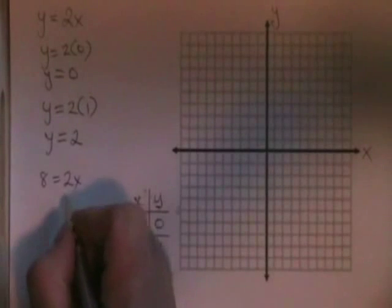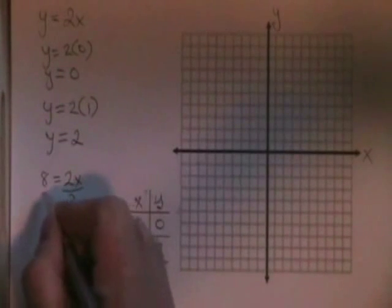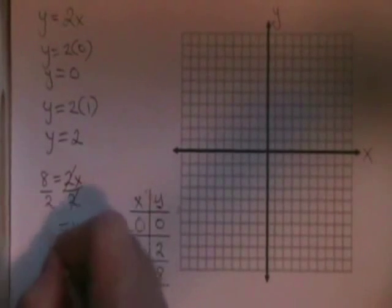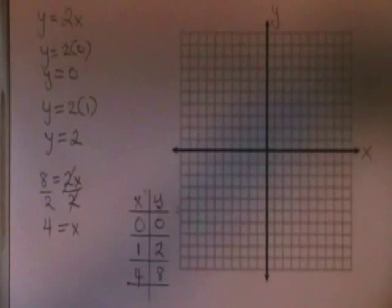My x is being multiplied by 2, so I divide both sides by 2 and cancel. My x is now isolated and is equal to 4. I have found the point 4,8.